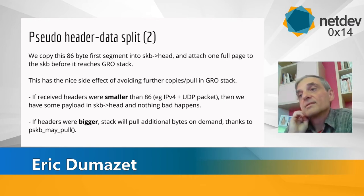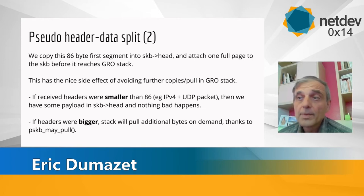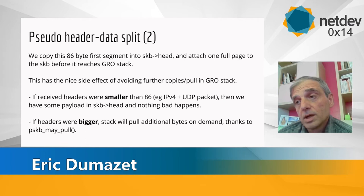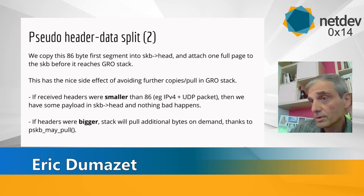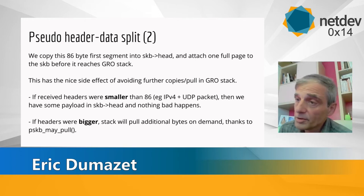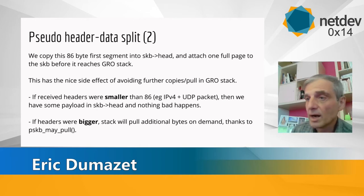So what happens with other packets — for example if you receive an IPv4 packet with UDP or TCP? The headers will be smaller, so no big deal: the SKB head will contain a bit of payload and the rest of the stack is happy with that. The UDP or TCP receive path will copy whatever bytes are in the SKB head and the page fragment. In case the headers are bigger than 86 bytes, no big deal either — the GRO, IP, or TCP layer will pull the missing bytes from the page into the SKB head on demand.